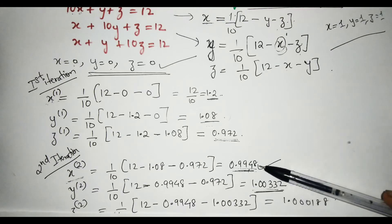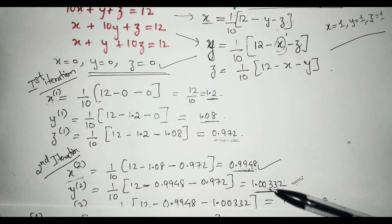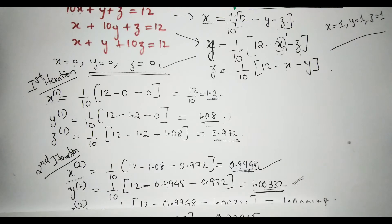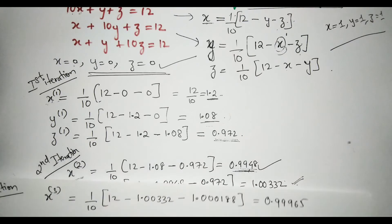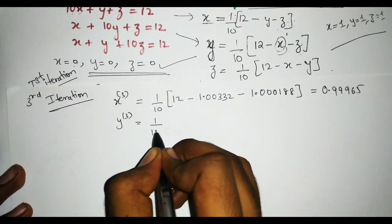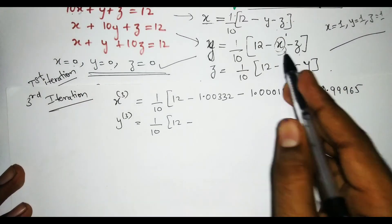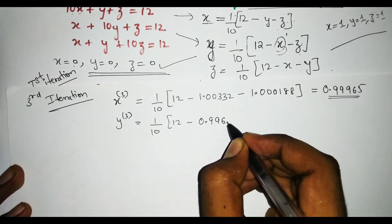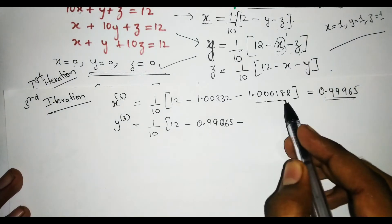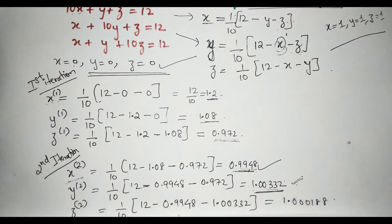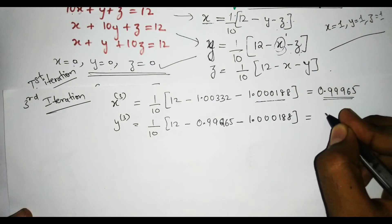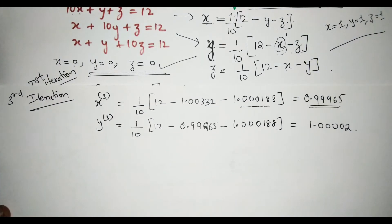You can observe that for each iteration, the values of x, y, and z are all getting nearer to 1. For y₃ = (1/10)(12 − x − z), the latest x value is 0.99965 and z is still 1.000188 (previous iteration's latest), giving y₃ = 1.0002.